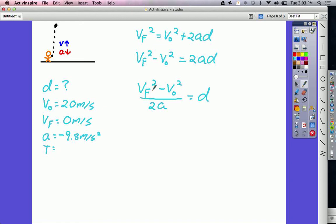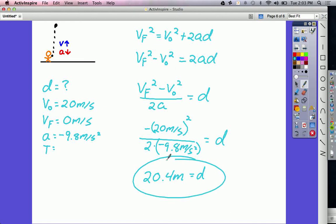Plugging in the numbers, VF is 0, so I'm not going to write it, but I've got to keep that negative sign. So minus 20 meters per second squared divided by 2 times negative 9.8 meters per second squared equals D. Plug that into your calculator, and you should get an answer of 20.4 meters for the displacement of the rock.